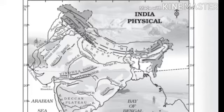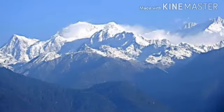Our country India is marked by a diversity of physical features. There are so many physical features in our country such as mountains, plateaus, plains, coasts, and islands. Standing tall in the north are the lofty, snow-capped Himalayas.